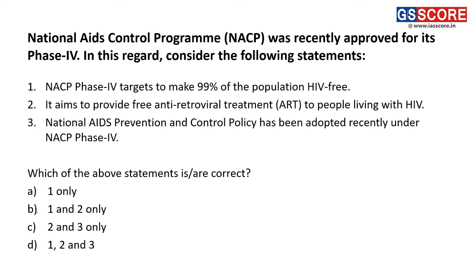Next question: National AIDS Control Program NACP was recently approved for its phase 4. Consider the following statements. First: NACP phase 4 targets making 99% of the population HIV free — this is a correct statement. Second: it aims to provide free antiretroviral treatment, ART, to people living with HIV — that is also the aim of NACP phase 4 and is correct.